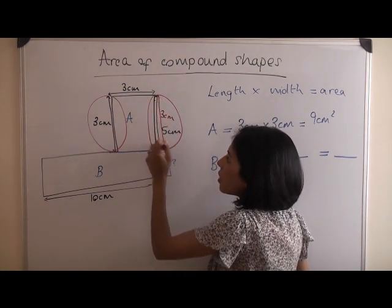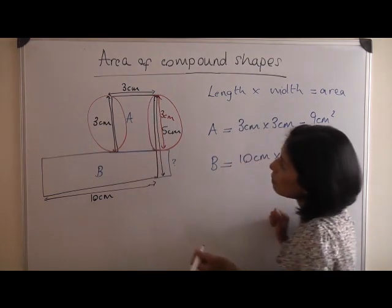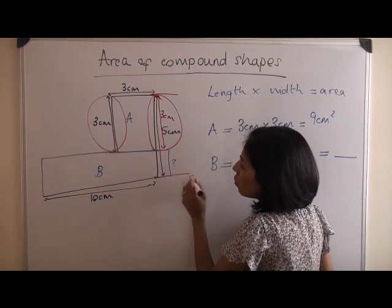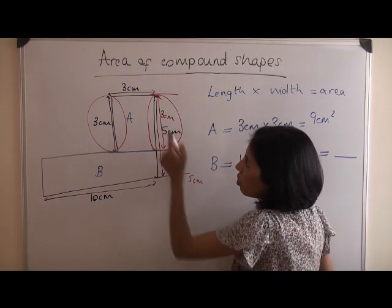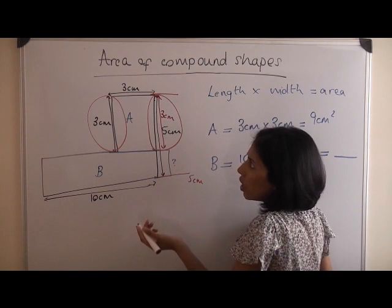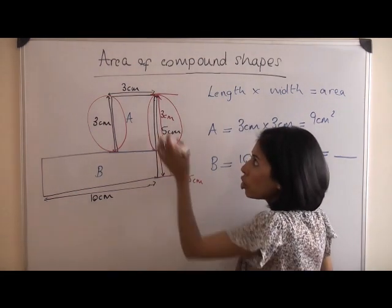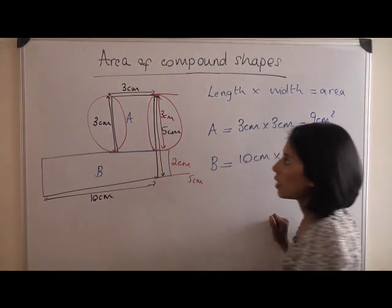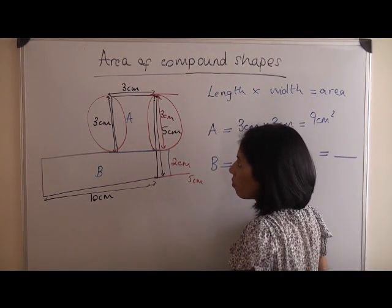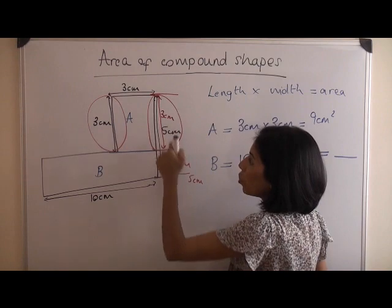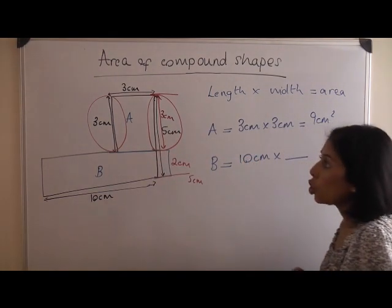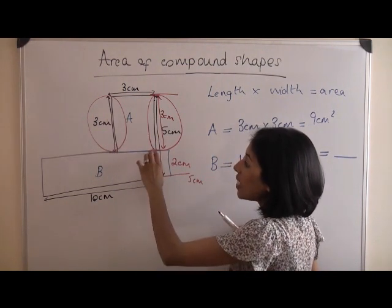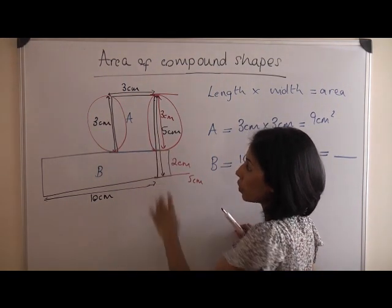So that must equal 3 centimetres. Altogether, that length from here to here equals 5 centimetres. So if that's 3, then you realize that if you add 2 to that, you get 2 centimetres. 3 and 2 is 5 centimetres. You've just figured out, using the parallel lengths, the missing length for that part of the compound shape.